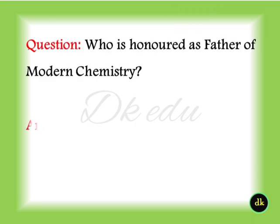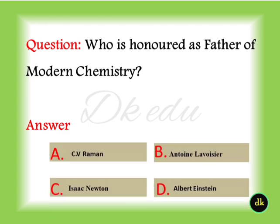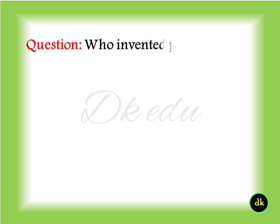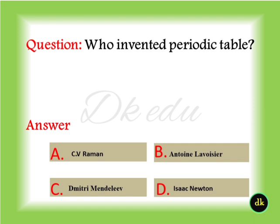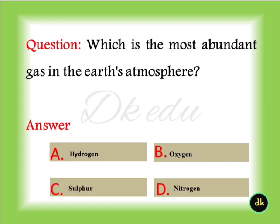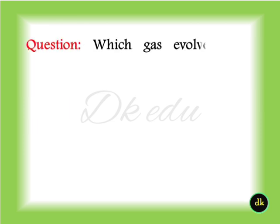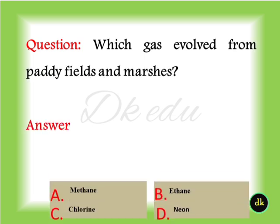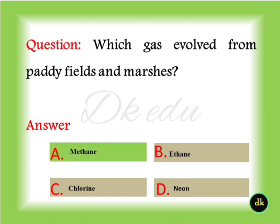Who is honored as the father of modern chemistry? Dmitri Mendeleev. Which is the most abundant gas in the atmosphere? Nitrogen. Which gas is evolved from paddy fields and marshes? Methane.